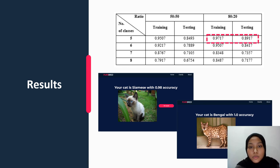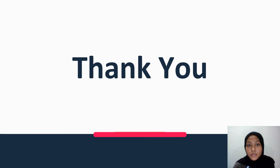The picture shows the system is able to classify Siamese with 98% accuracy and Bengal with 100% accuracy. So that is all from me. Thank you and have a nice day.